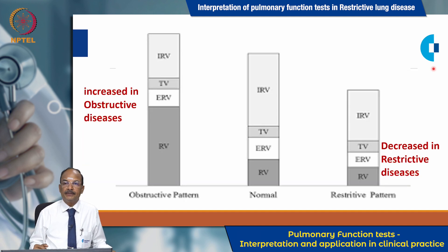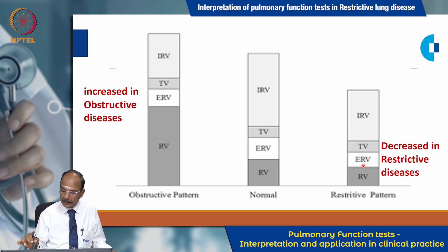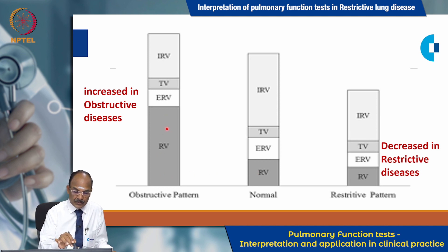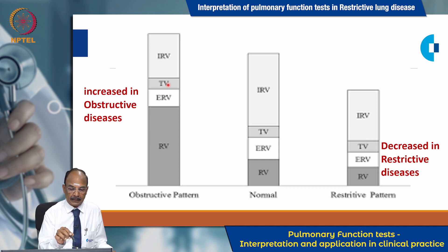Looking at volumes and capacities, the middle reference shows residual volume, expiratory reserve volume, tidal volume, and inspiratory reserve volume. In restrictive lung disease, all parameters are reduced: RV is reduced, expiratory reserve volume is reduced, tidal volume is less, and IRV is also reduced. In obstructive disease, compared with normal, there is a significant increase in residual volume, ERV is less than normal, tidal volume is preserved, and inspiratory reserve volume is increased, because air is not able to be expelled out due to obstruction.